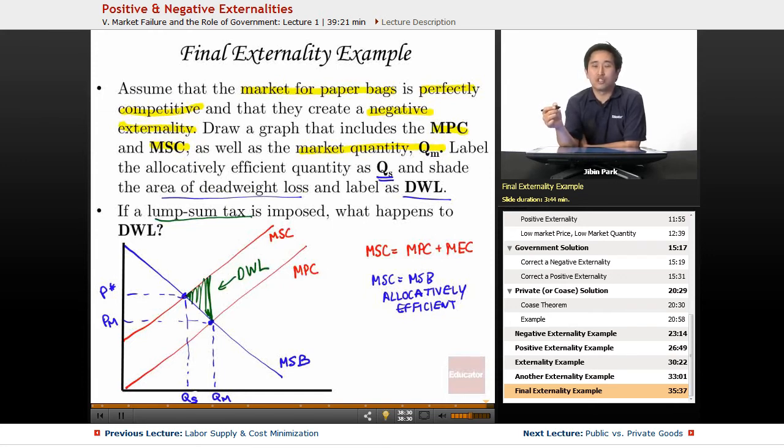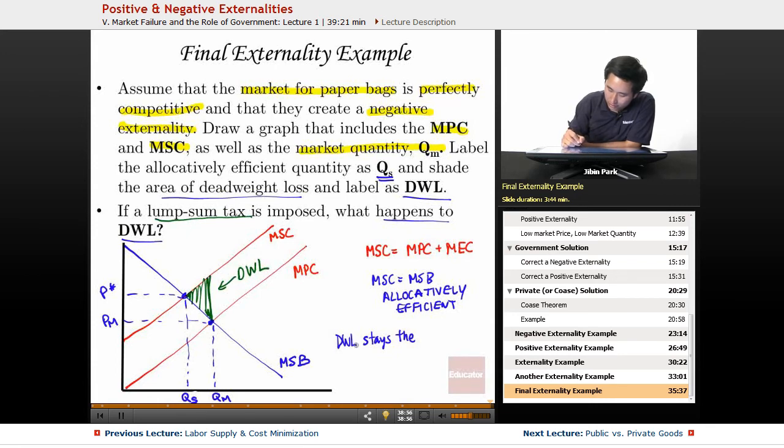So in this case, if a lump sum tax is imposed, what happens to deadweight loss? Well, if there's a lump sum tax, it doesn't affect any of the marginal cost, so none of the profit maximizing quantity changes. So what happens to the deadweight loss? It stays the same. The DWL stays the same.